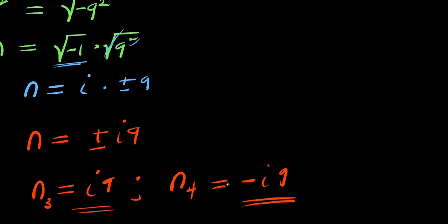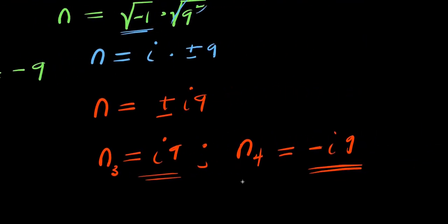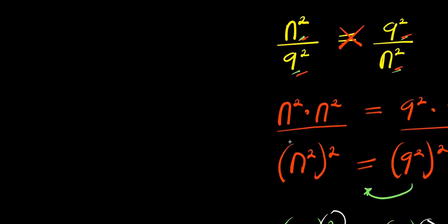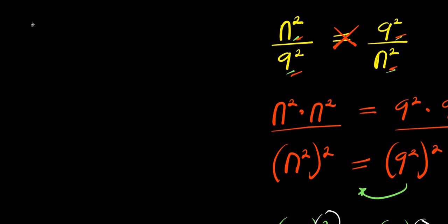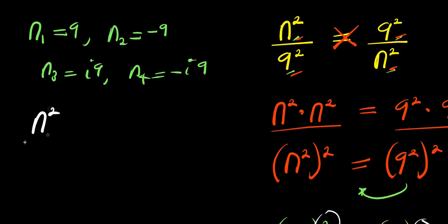So those are the four different solutions — two real and two complex. We have n1 equals 9, n2 equals negative 9, n3 equals i times 9, and n4 equals negative i times 9. Now we will check each of these values satisfies the original equation: n power 2 divided by 9 power 2 equals 9 power 2 divided by n power 2.